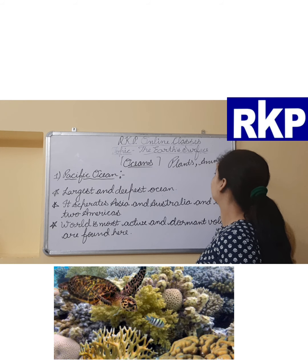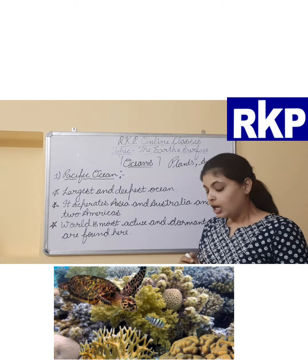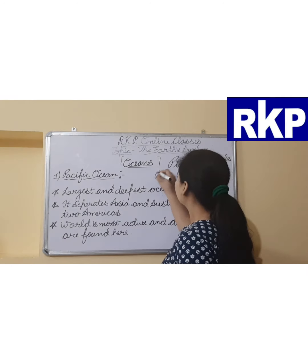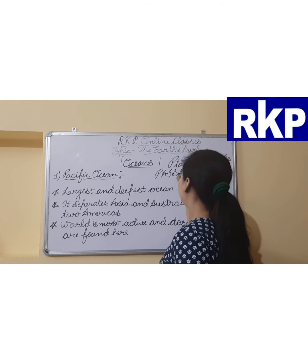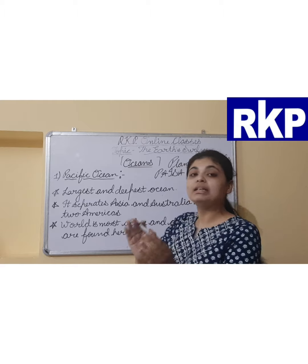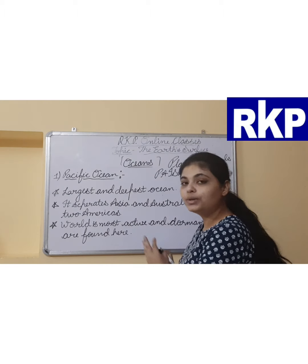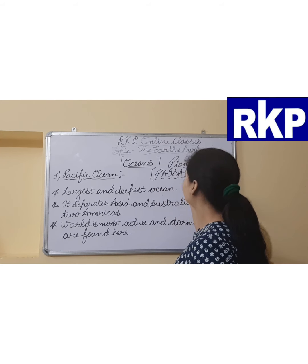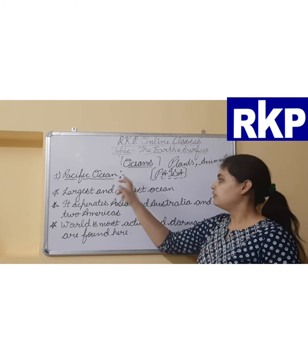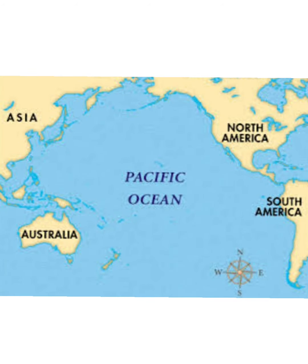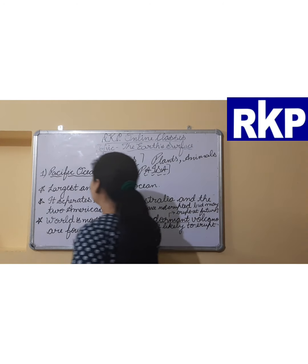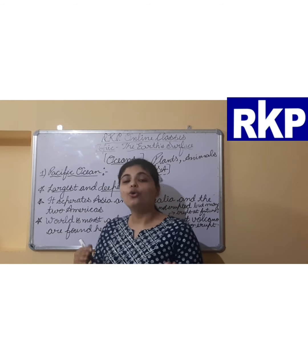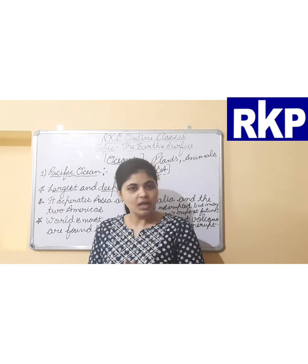Students, we will discuss about the oceans — how many oceans are there in the world, and we will discuss all of them. So what is an ocean exactly? Oceans are the saltwater bodies that cover approximately 71 percent of the Earth's surface area. A rich variety of plants and animals are found in the ocean.